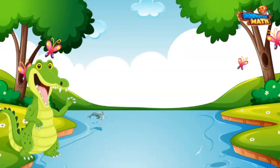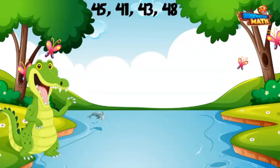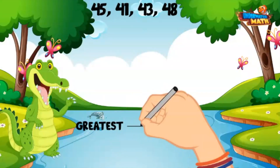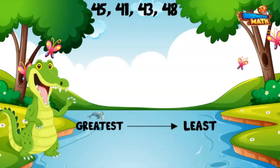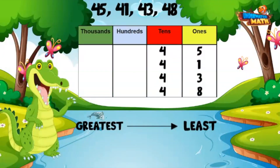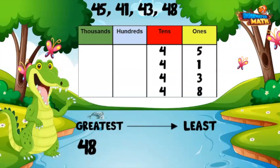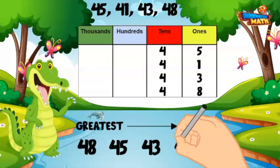I have a few numbers I want to put in order next. We have 45, 41, 43, and 48. I want to put them in order from greatest to least. This means that the biggest number needs to come first and then go in order until we reach the smallest number. Let's put all the numbers in a place value chart to help. Bingo! I can see that all the numbers have a 4 in the tens place, so I will move to the ones to compare. 8 is the greatest number of ones, so 48 is the greatest number. The next greatest ones is 5, so 45 is next on the list. Then 3 — 43. Finally, 1 is the least amount of ones, so 41 is the least number and comes last.